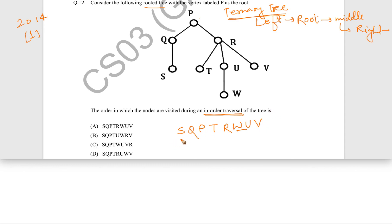So our traversal is S, Q, P, T, R, W, U, V. So what is the option here? S, Q, P, T, R, W, U, V, the first one. So the answer is A.